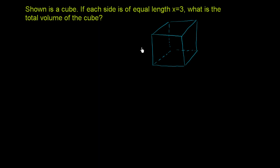So each side is equal length x, which happens to equal 3. So this side is 3. This side over here, x is equal to 3. Every side, x is equal to 3.